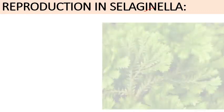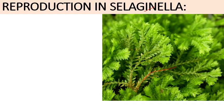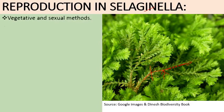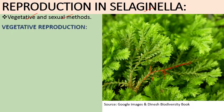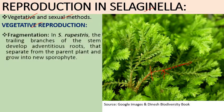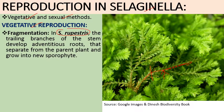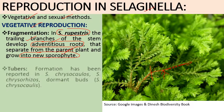Vegetative reproduction happens with the help of fragmentation, tubers, and bulbils. In case of Selaginella rupestris, the horizontal branches have some adventitious roots, and when mature, this branch will form a new plant body. The trailing or creeping branches of the stem develop adventitious roots and are separated from the parent plant, growing into new independent sporophytes.